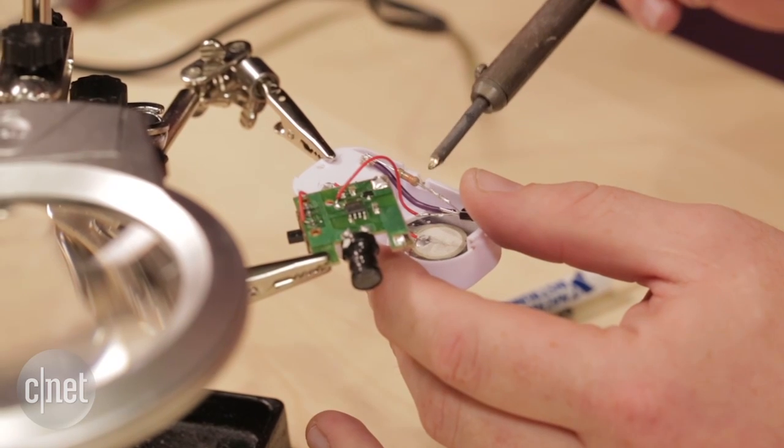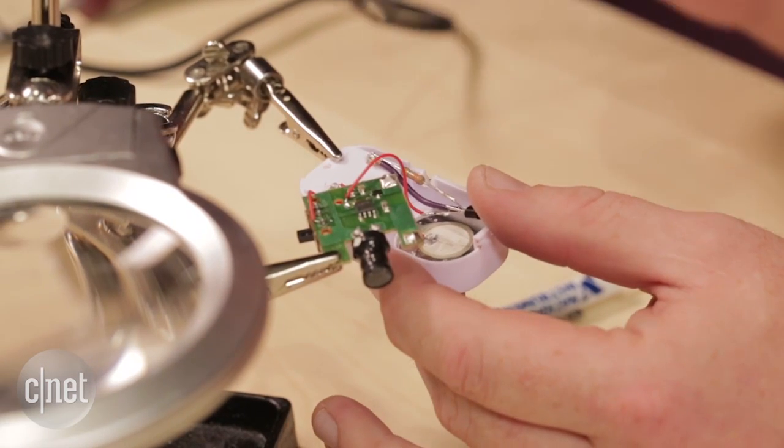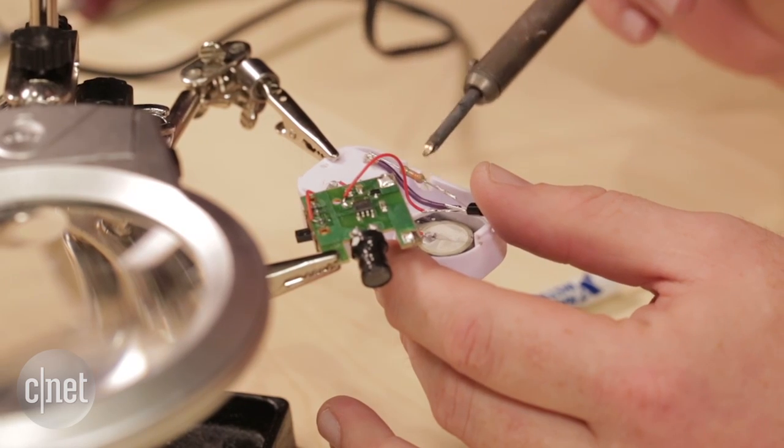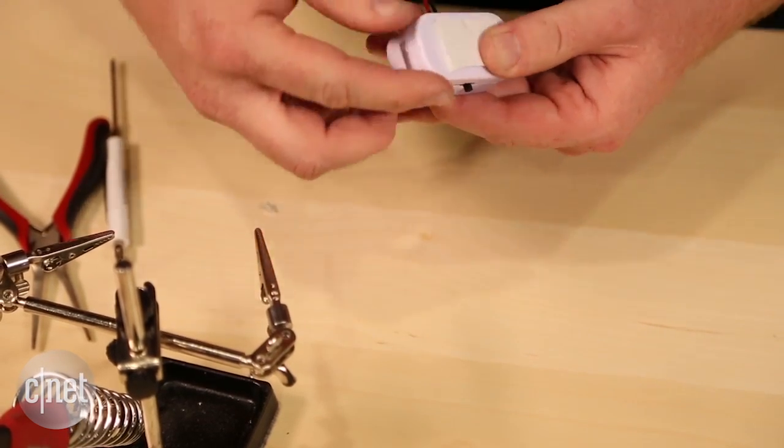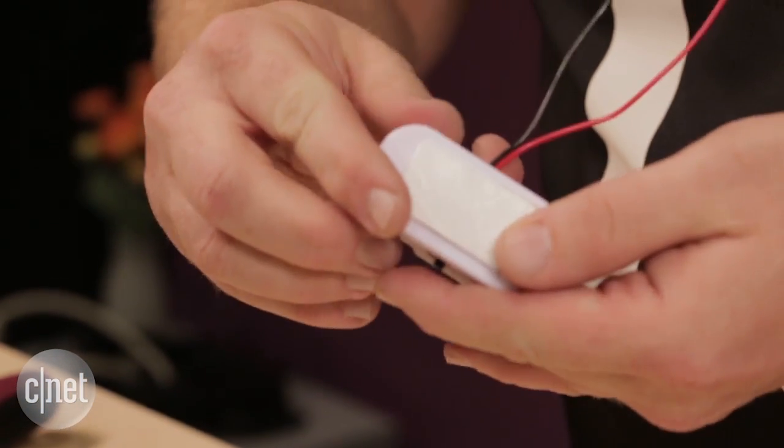At this point you'll want to make a hole in the side of the door window sensor case. Finally you'll want to arrange all the components in such a way that you can close the case again with all of them inside. Except for those two lead wires which should be sticking out the side through the hole that you created.